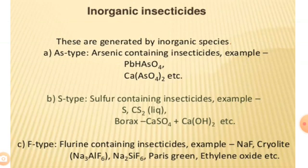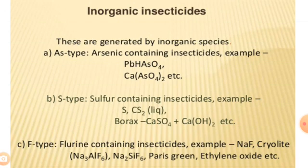Paris green is also an inorganic insecticide; it is copper aceto-arsenate. It forms a heavy powder that settles in water unless well agitated. It is removed rapidly from foliage by weathering and decomposes by water, carbon dioxide, and ammonia. It is generally used as a dust powder and can be mixed with Bordeaux mixture but not with lime sulphur. Paris green is used against codling moths, potato beetles, and surface-feeding larvae.